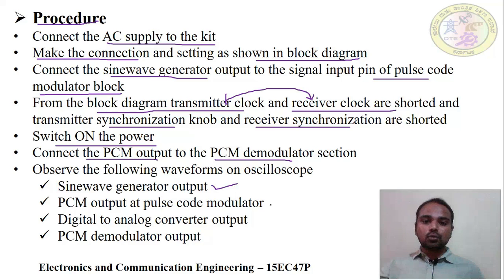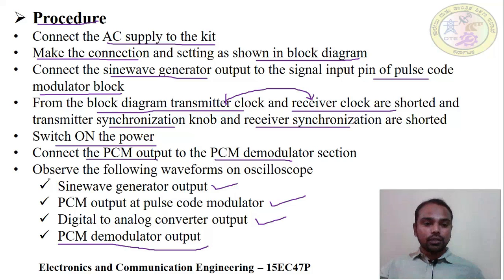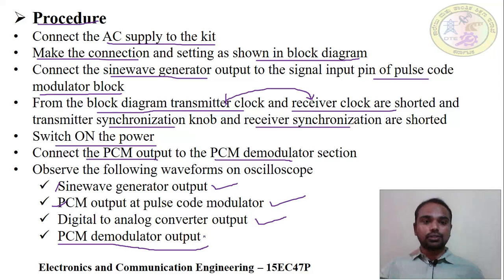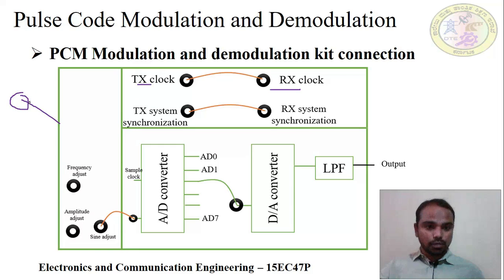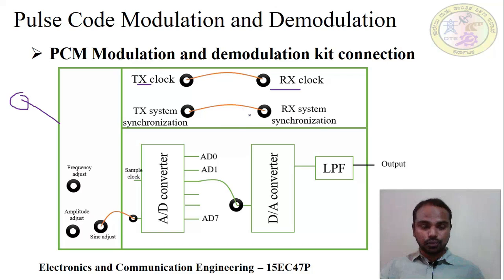We observe the PCM output at the pulse code modulator, the data-to-analog converter output, and the PCM demodulator output — where we again get back the analog signal. These are all the steps of PCM modulation and demodulation. In the kit diagram, the transmitter clock is connected to the receiver clock first, then connected to the power supply. The transmitter and receiver clocks are connected to synchronize the transmission and reception systems.